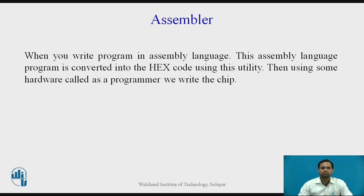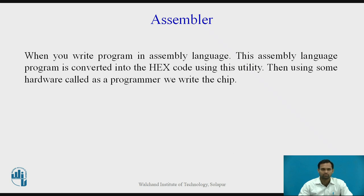Assembler. When you write a program in assembly language, it is converted into hex code using the assembler utility. Generally, the assembler converts code written in C or assembly language into hex code. Then, using hardware called a programmer, this hex code is written into the microcontroller chip.